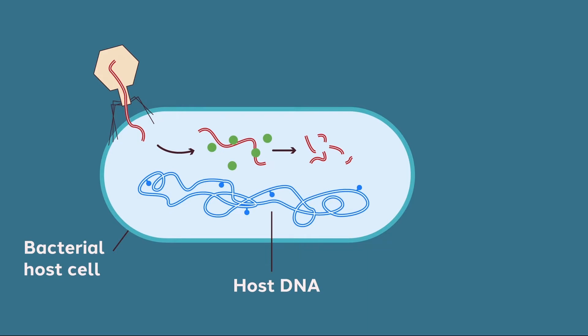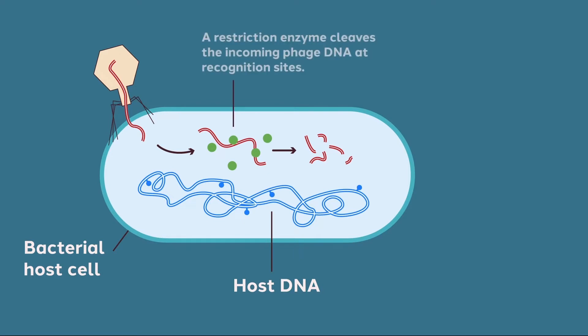However, bacteria have evolved mechanisms to protect themselves. One of these mechanisms is the restriction and modification system. There are two important parts to the restriction and modification system. The first is the restriction enzyme.